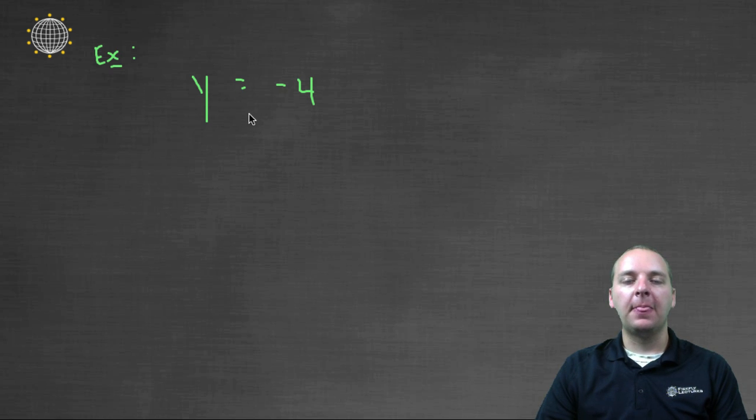For this guy, we actually are going to call this a linear equation. Typically, our linear equations do have two variables. But that's not an absolute requirement to be a linear equation.